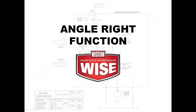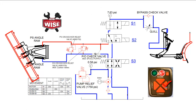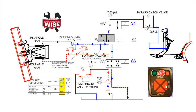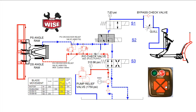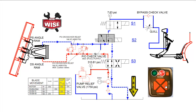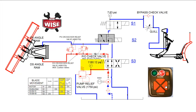We will now demonstrate the angle right function. Pressing the angle right button on the cab control activates the motor and the S2 cartridge. Hydraulic fluid then flows through the unshifted S3 valve, through the PO check valve, extending the driver side angle ram. The passenger side angle ram forces returning hydraulic fluid through the shifted S2 valve, the unshifted S3 valve, and back to tank. When the blade is fully angled, pressure will build to the pump relief setting and then bypass directly to tank.